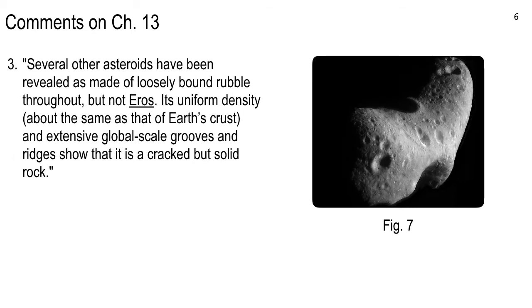Anyway, it's figure seven from the textbook. And here's something interesting. Several other asteroids have been revealed to be made of loosely bound rubble throughout, but not Eros. Its uniform density, about the same as that of Earth's crust, and extensive global scale grooves and ridges show that it is cracked, but solid rock. So, this is probably a fragment of something. It's basically, a student asked me in the first class, how big is it, Dr. B? And I could not answer, but now I can answer. It's maybe you could lay it down inside Orange County. Maybe 20 kilometers long and so forth. So, from the tip of the shoe to the heel of the shoe. So, you could walk around it very carefully in a couple days.